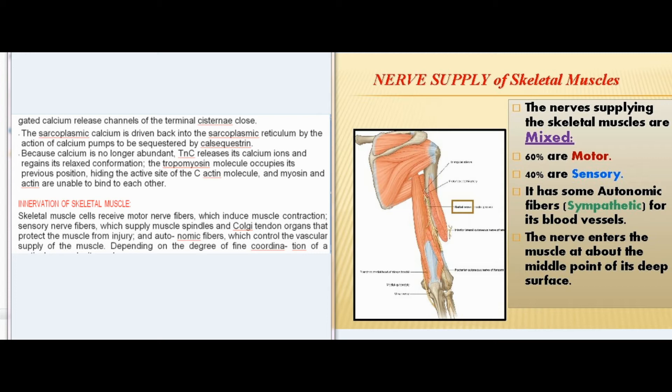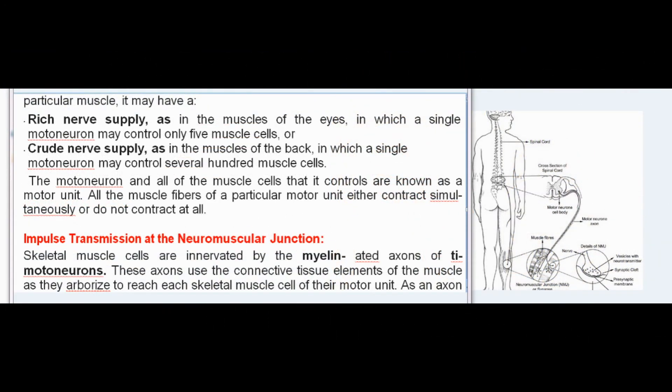Skeletal muscle cells receive motor nerve fibers, which induce muscle contraction; sensory nerve fibers, which supply muscle spindles and Golgi tendon organs that protect the muscle from injury; and autonomic fibers, which control the vascular supply of the muscle. Depending on the degree of fine coordination, a muscle may have a rich nerve supply — as in the muscles of the eyes, where a single motoneuron may control only five muscle cells — or a crude nerve supply, as in the muscles of the back, where a single motoneuron may control several hundred muscle cells. The motoneuron and all of the muscle cells that it controls are known as a motor unit; all the muscle fibers of a particular motor unit either contract simultaneously or do not contract at all.